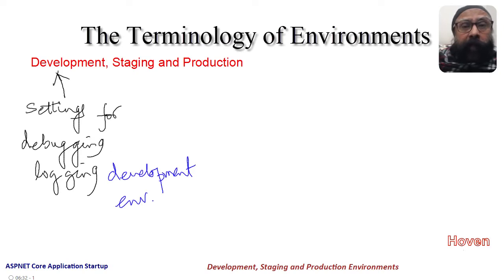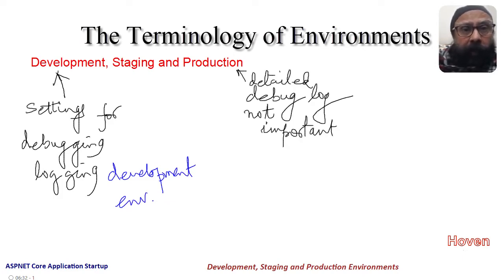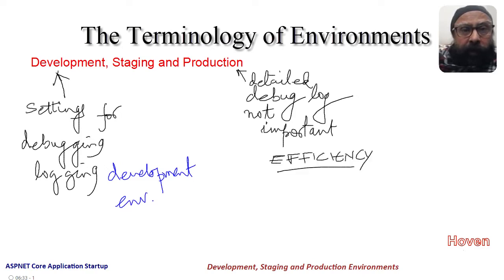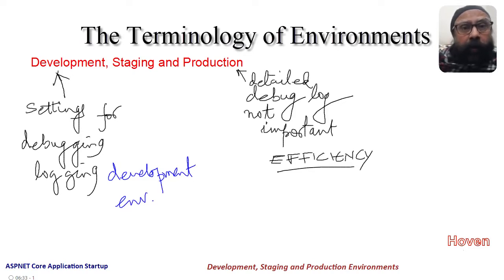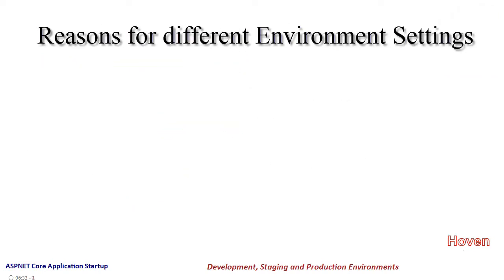These settings are collectively called the development environment. An app running in the production environment is opened for the use of end customers. The environment settings are such that debugging and logging code is either removed or replaced by no-op (no operation) statements — efficiency of execution is the main objective here. The staging environment has all the settings of the production environment, but the app is run on the development computer. It is like a final rehearsal.